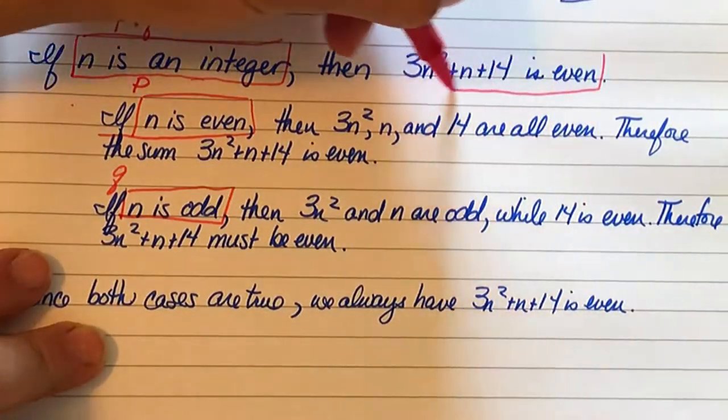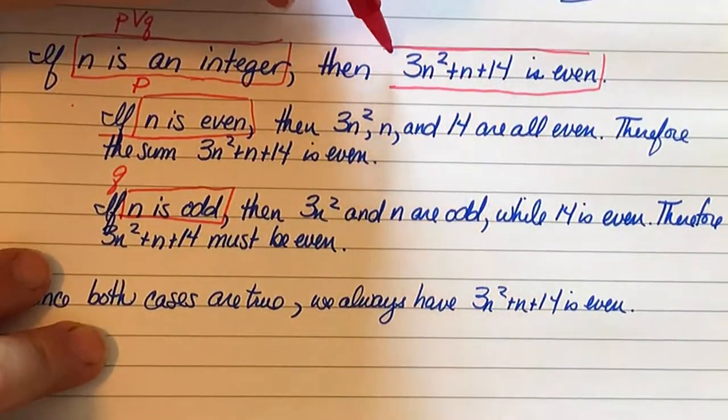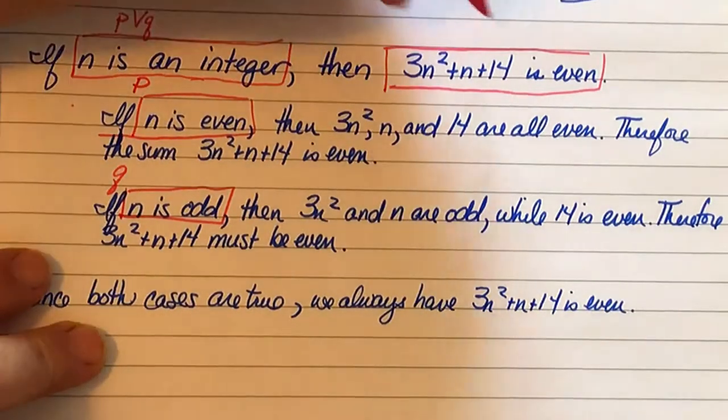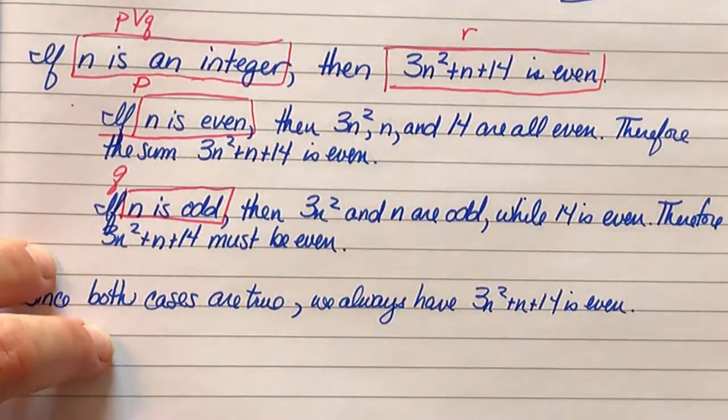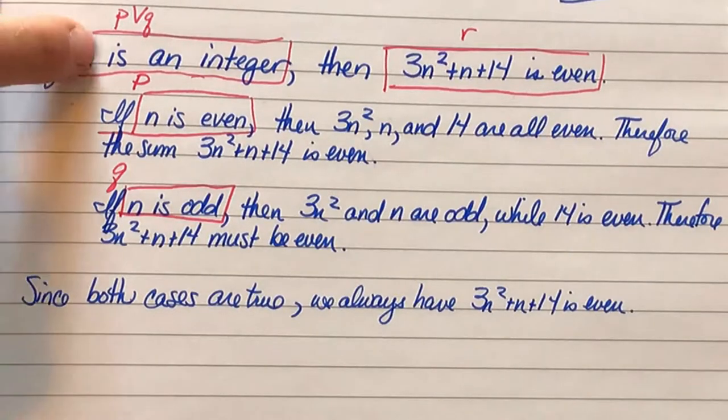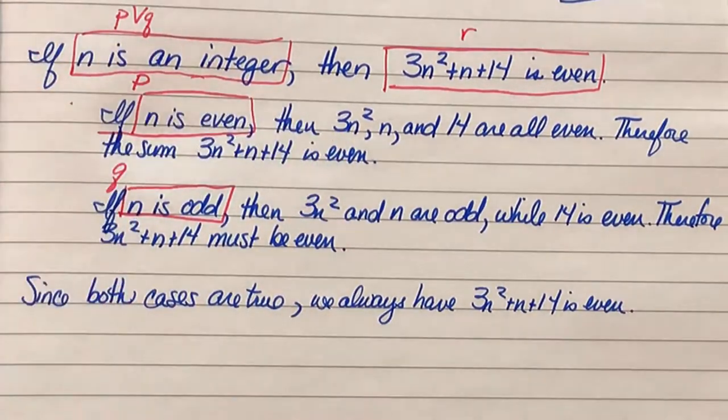We're going to declare that this piece over here, this statement, will be r. So you can see up here how it's if p or q is true, then r has to be true.